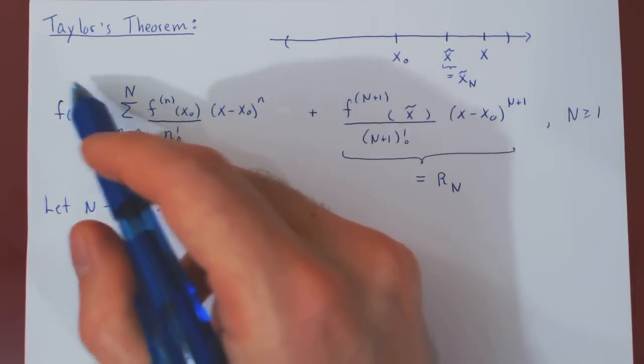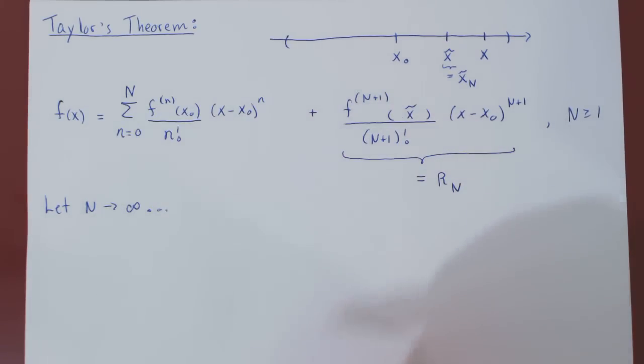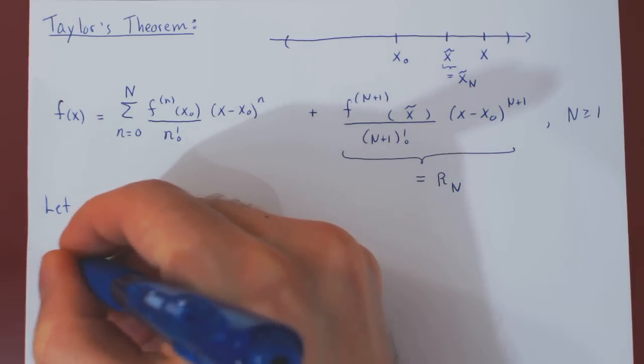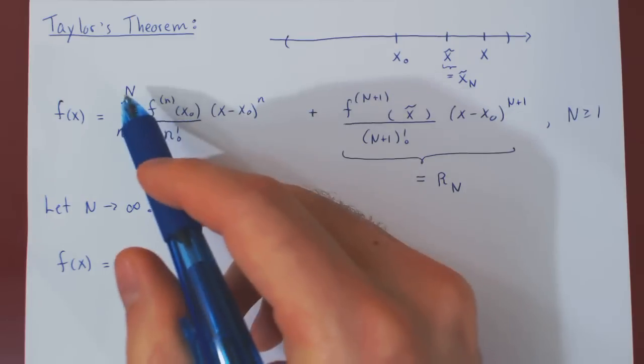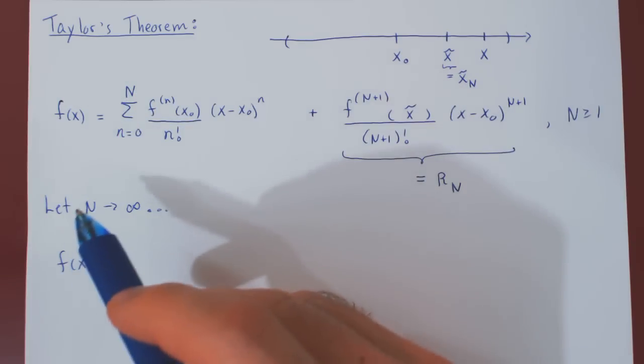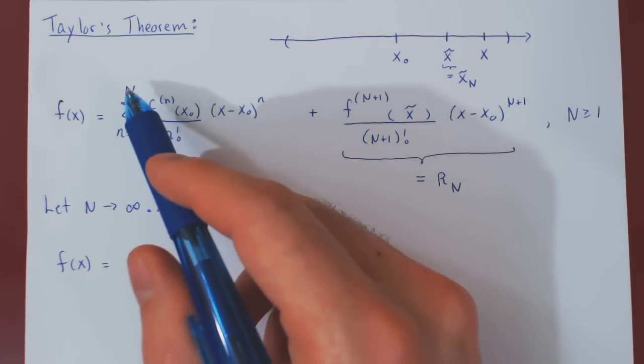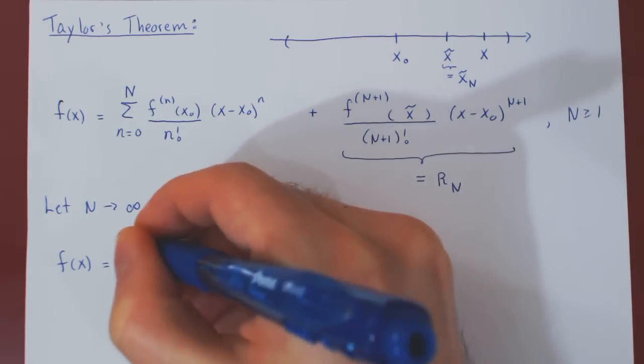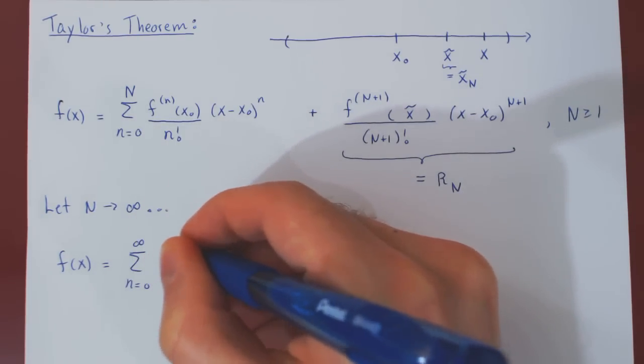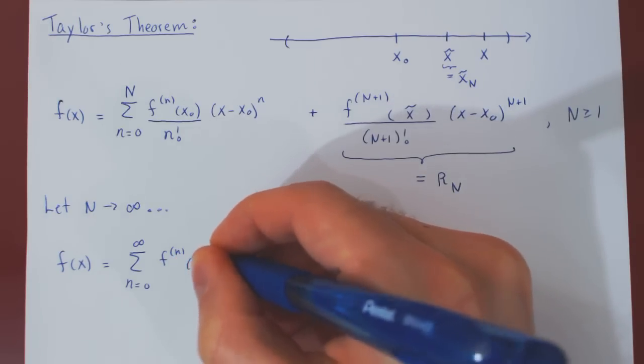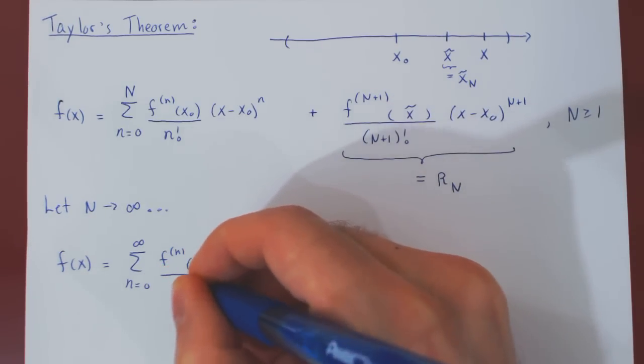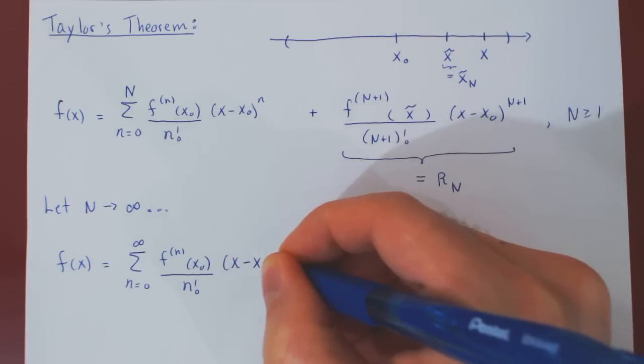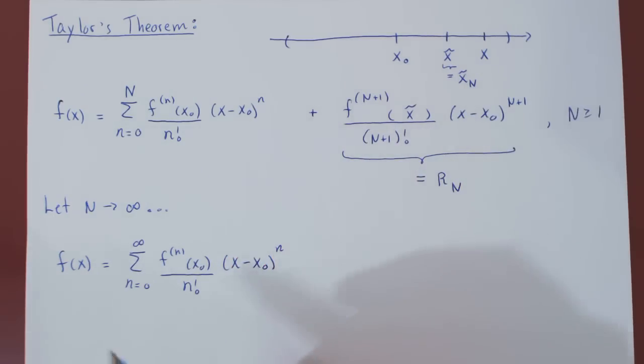As we're letting n tend to infinity, f(x) is always f(x). This does not change. As we're letting n tend to infinity, the truncated Taylor series will become the full Taylor series. So summing from 0 to infinity, the nth derivative of the function at the center x0 over n factorial times x minus x0 to the n. And what we hope, of course, is that the function will equal to its Taylor series centered at x0.